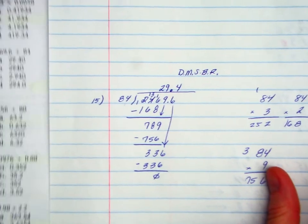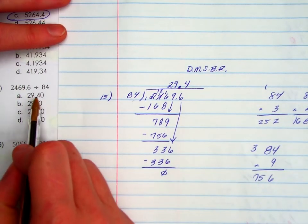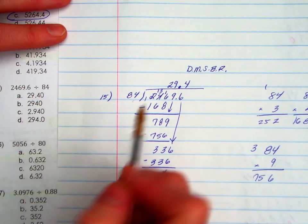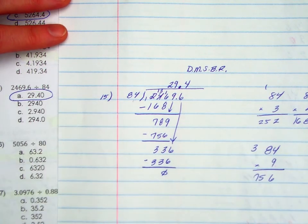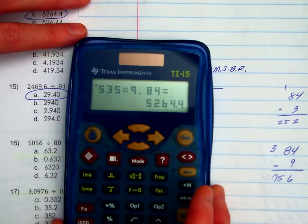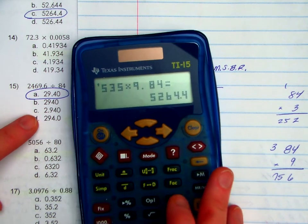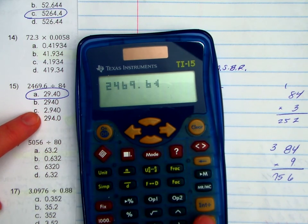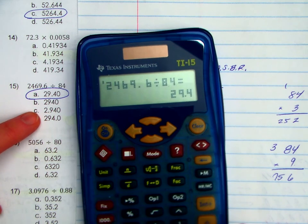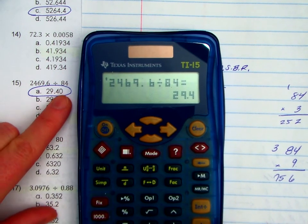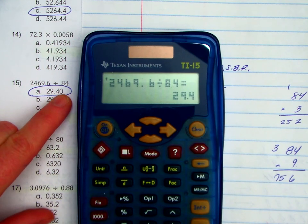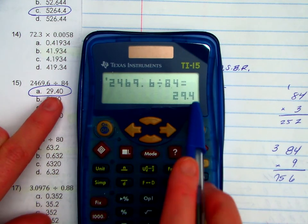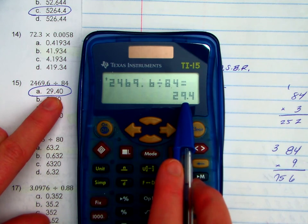Let's see if that's an answer choice. 29.40 is the same as 29.4. We like it a lot. I'm going to test it on my calculator. Perfect. Remember that zero is a placeholder. He's not actually holding any value, so he does not change the value as indicated by the calculator.